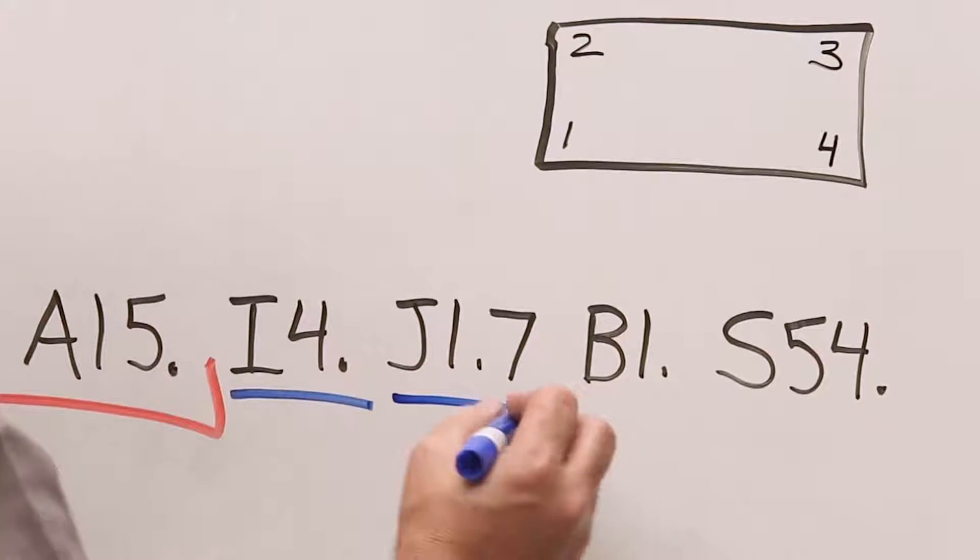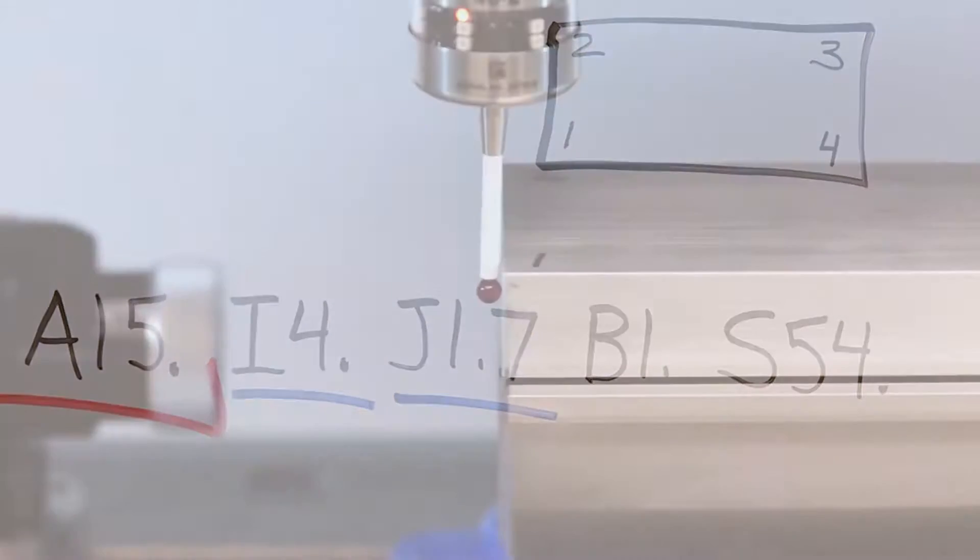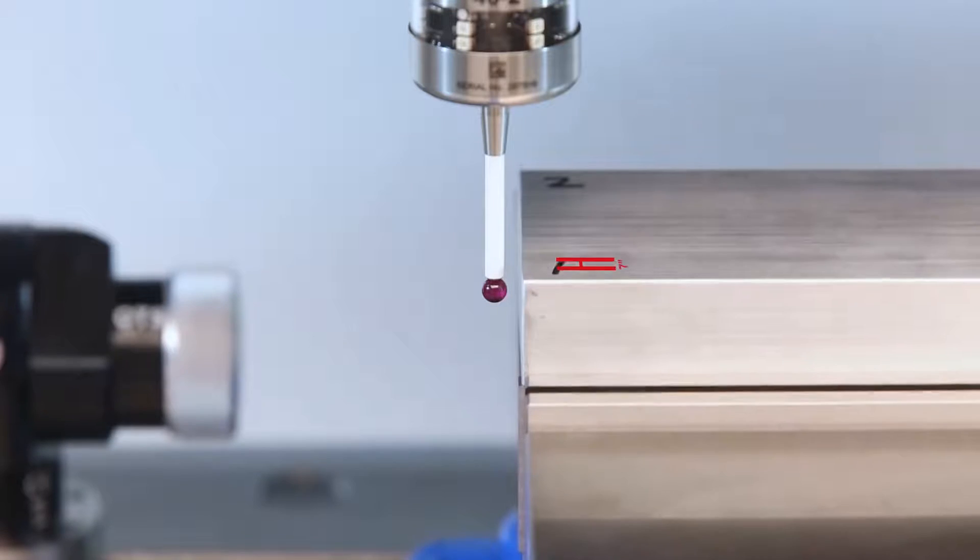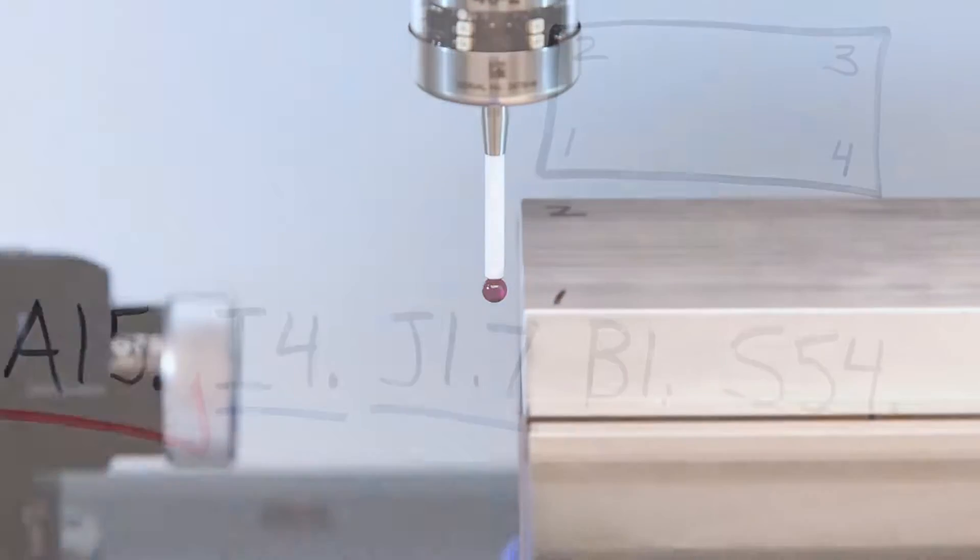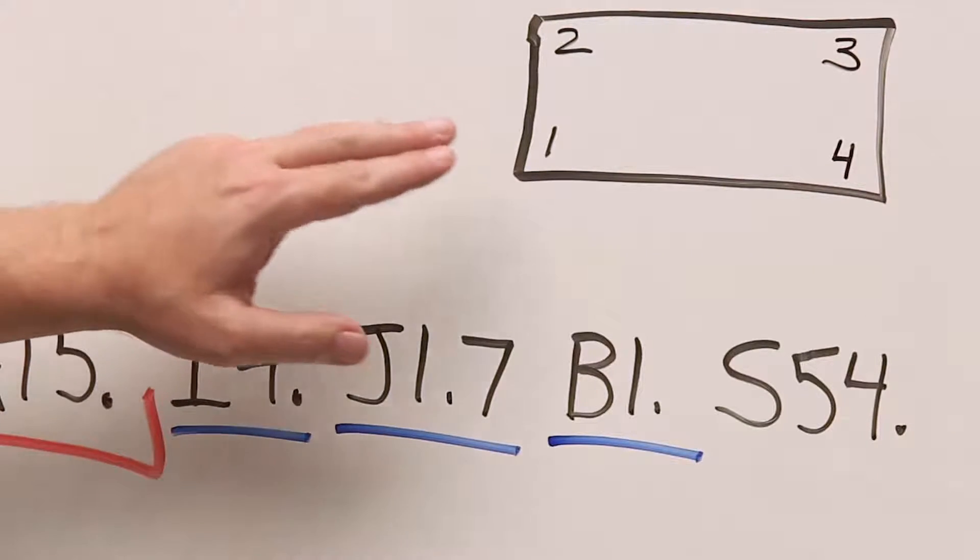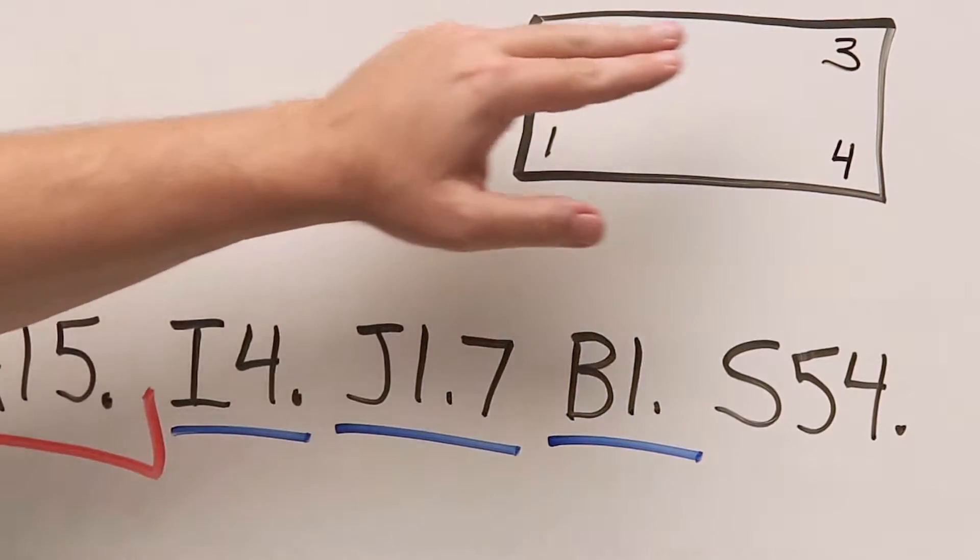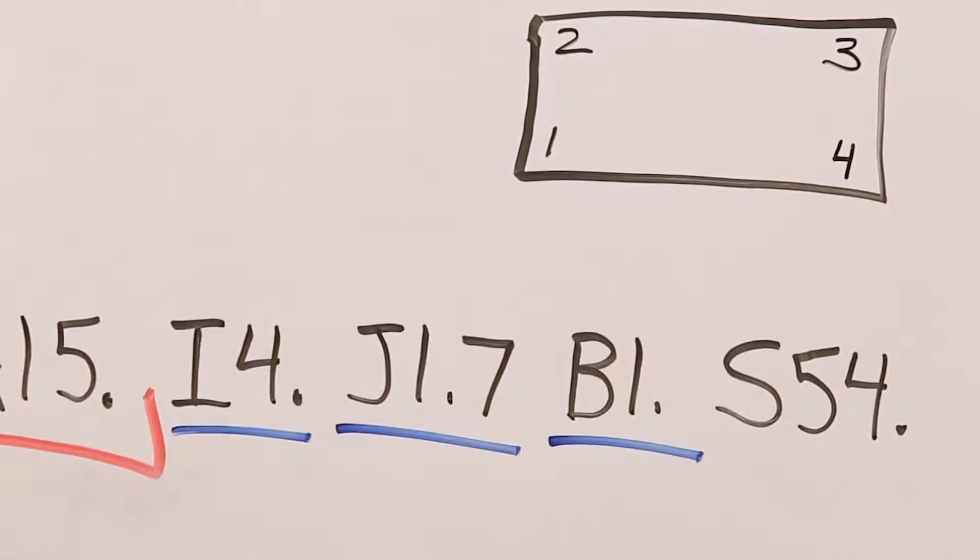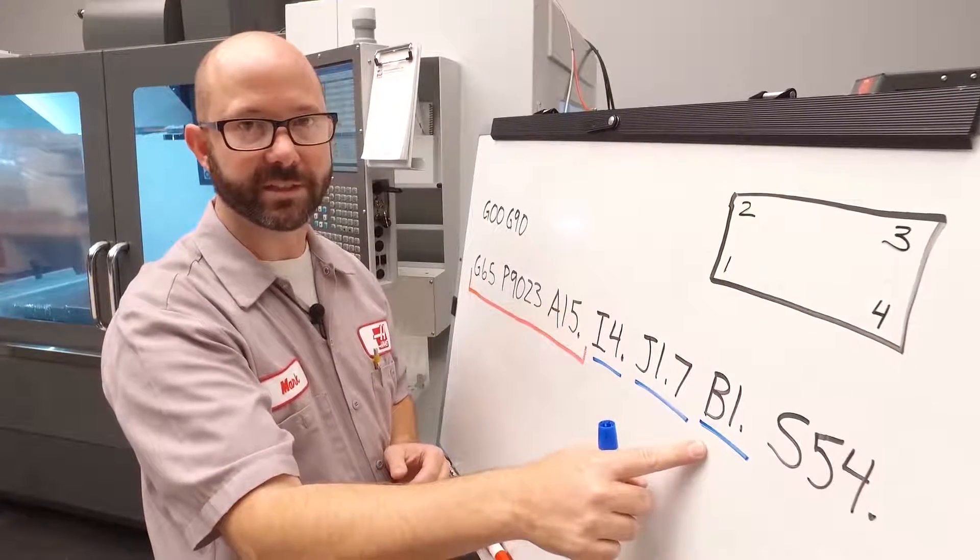Next, we're gonna add our J value. In our example, we moved up 1.7 inches between our Y-axis probe hit points. Next, we come to our B value. This is a corner that we'd like to start from. One, two, three, or four. We started out at corner one, so I used a B1 decimal.